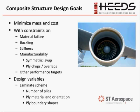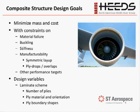We also typically constrain buckling and stiffness of our parts, and we sometimes look at other performance targets such as acceleration that we constrain during an optimization run. We'd like to take into account the manufacturability of the parts — we want layups that are symmetric and balanced — and we consider ply drops and overlaps that will be implemented during manufacturing. Our typical design variables are number of plies, ply material, ply orientation, and ply boundary shapes.